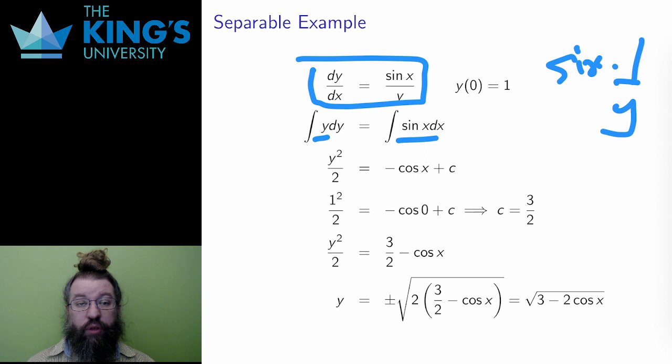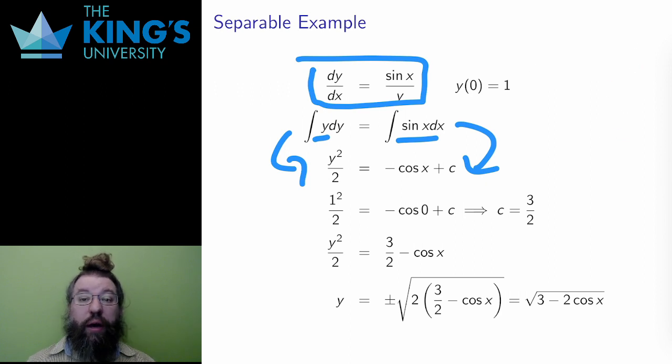I do both integrals. y, as a reverse power rule, gets y²/2, and sin from the tables gets -cos(x) + c. Now the integrals are done, but I don't yet have a function. I have to solve for y as a function of x, since y is the dependent variable here. However, before I do that, I can use the initial condition to determine c.